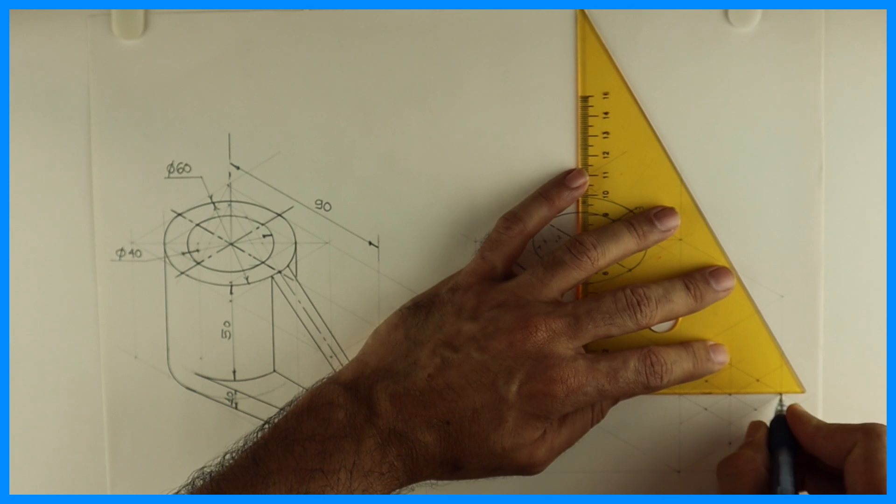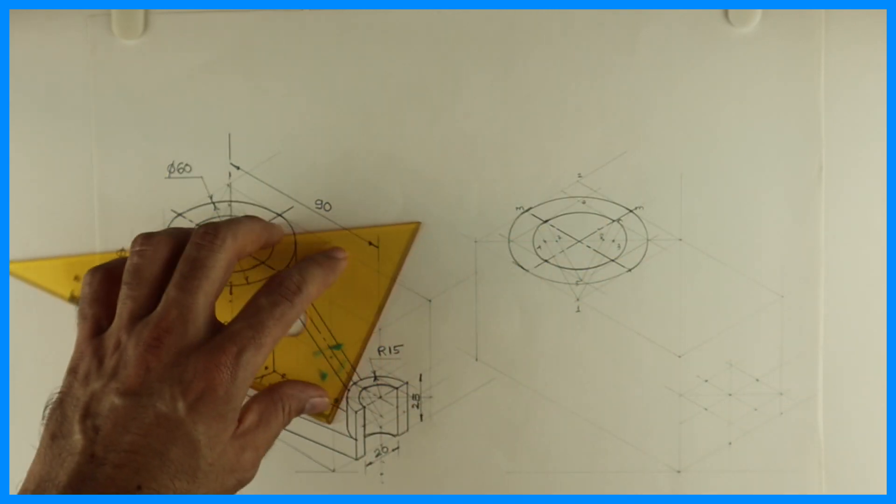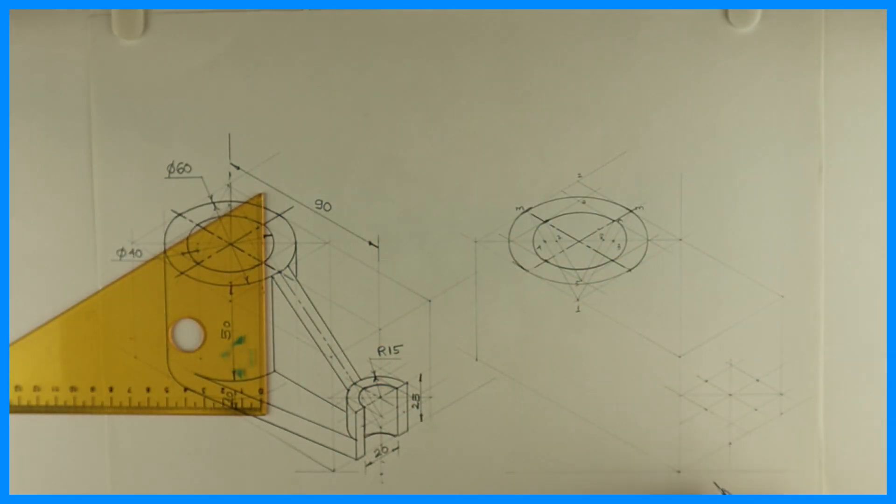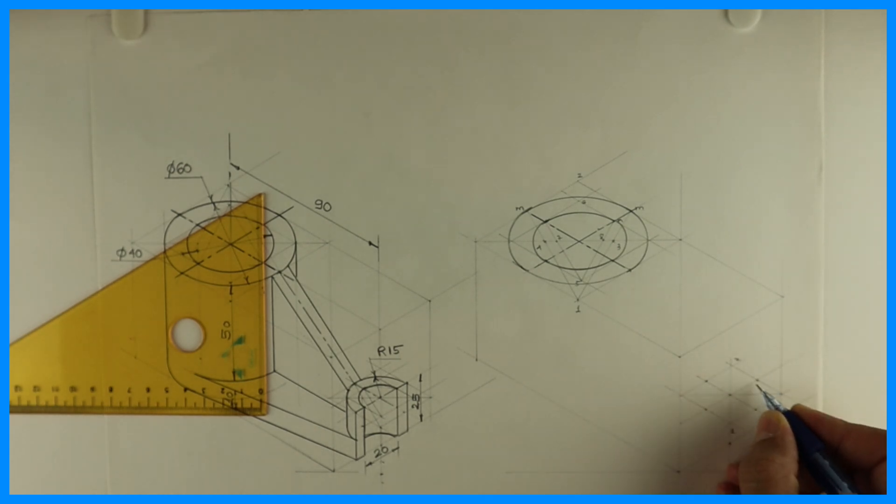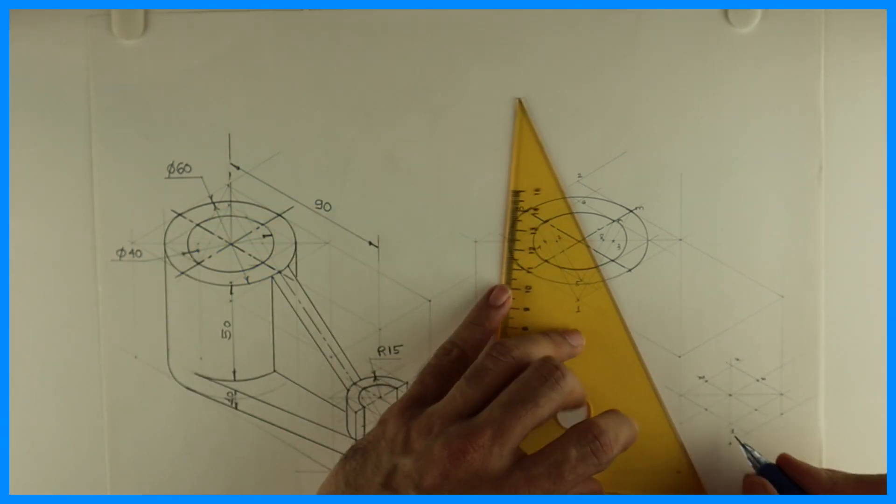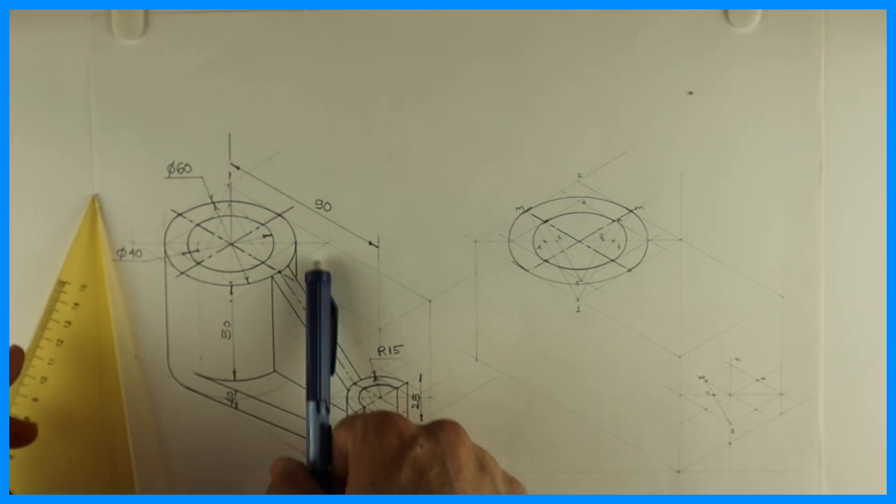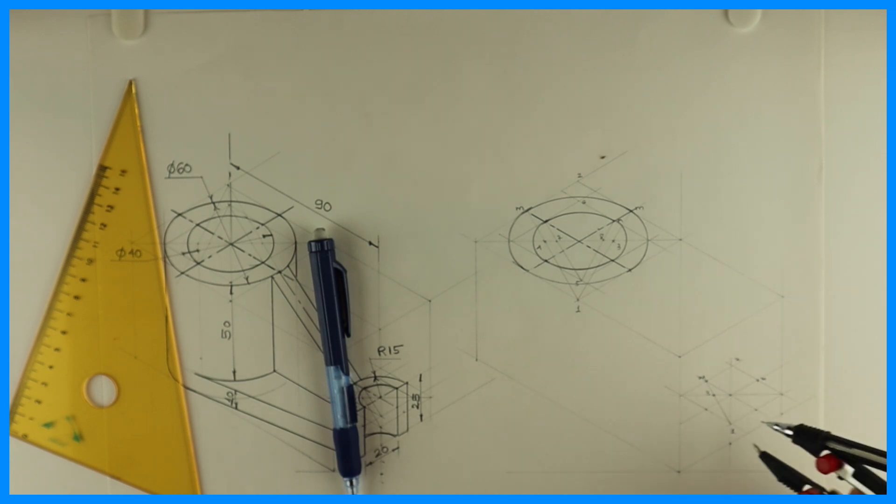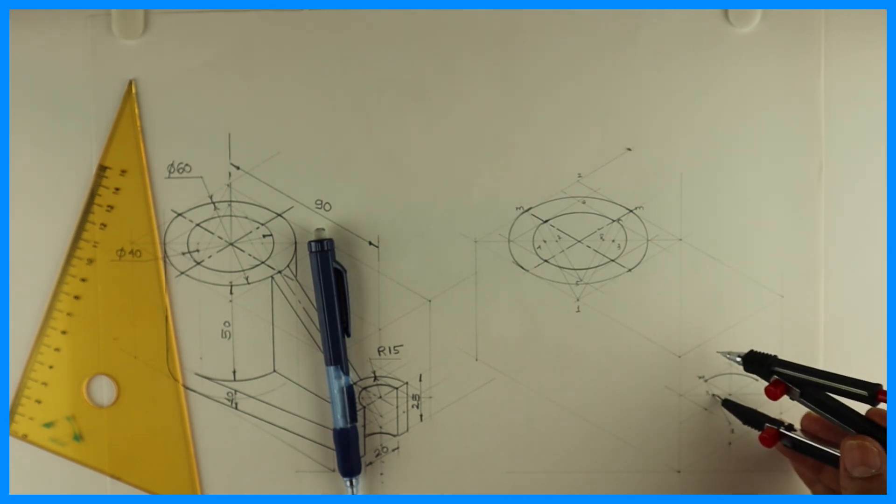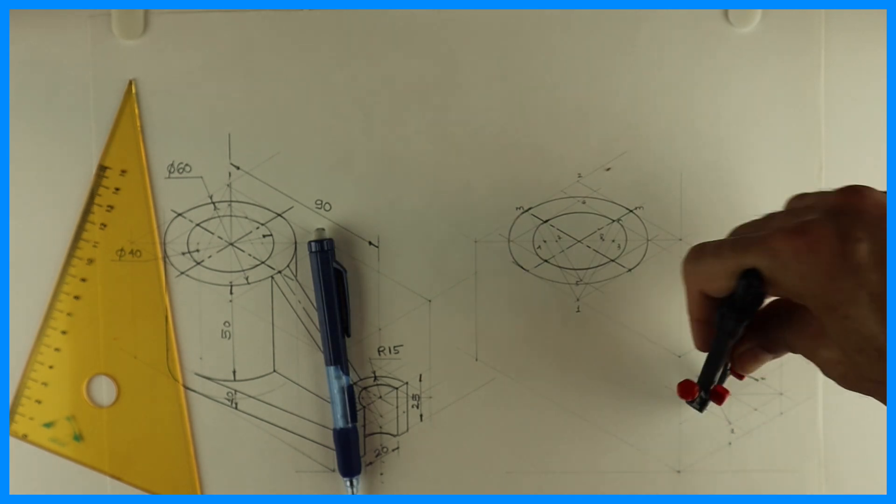You draw the longest diagonal. Let's say this point is one, two, M, M. From one, one to M, we'll draw arc. Three to M, we'll draw another arc.